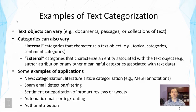Here are some specific examples of text categorization. Text objects can vary — we can categorize a document, a passage, a sentence, or collections of text. As in the case of clustering, the units to be analyzed can vary a lot, creating many possibilities.